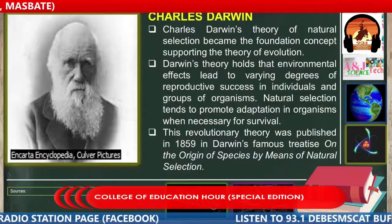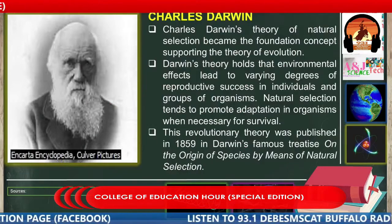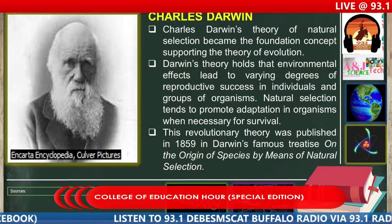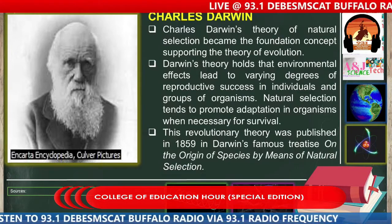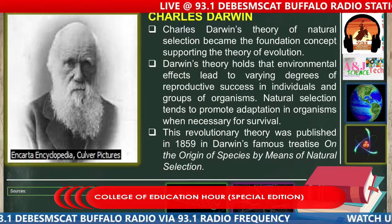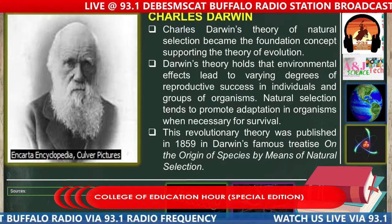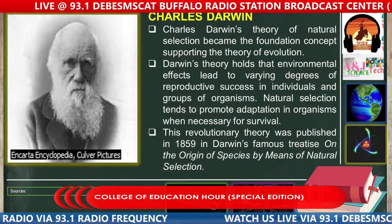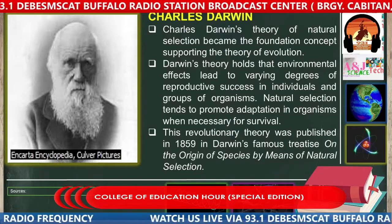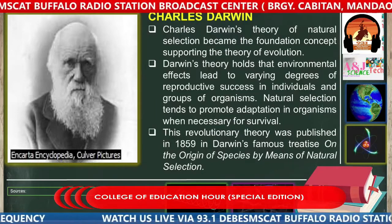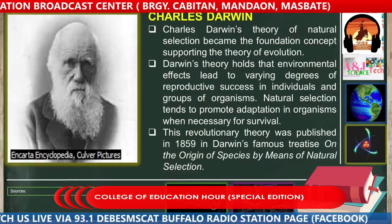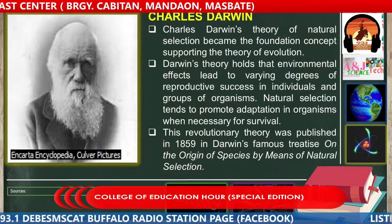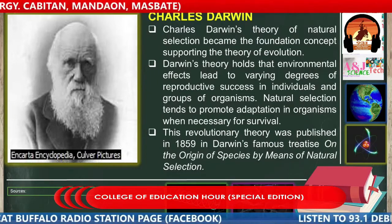This revolutionary theory was published in 1859 in Darwin's famous treatise On the Origin of Species by Means of Natural Selection. By means of natural selection means those organisms that are adapted to a certain harsh environment and were able to adapt to the changes of time have a higher tendency to survive and produce new offspring.